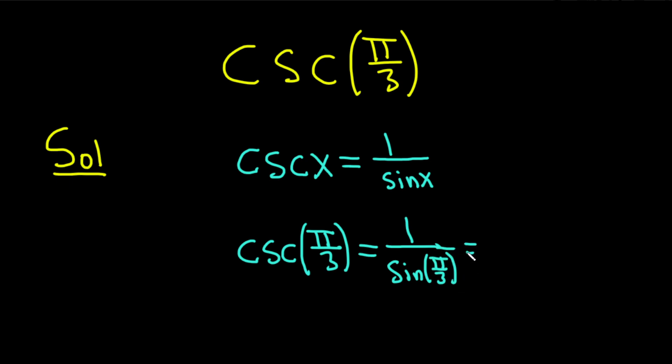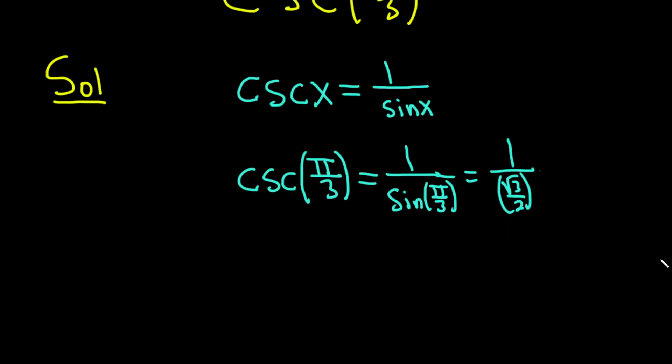So this is equal to 1 over the sine of pi over 3, which is the square root of 3 over 2. And so we have 1 divided by the square root of 3 over 2. When you divide you really multiply by the reciprocal. So this is really equal to 1 times the reciprocal of that, which is 2 over root 3.